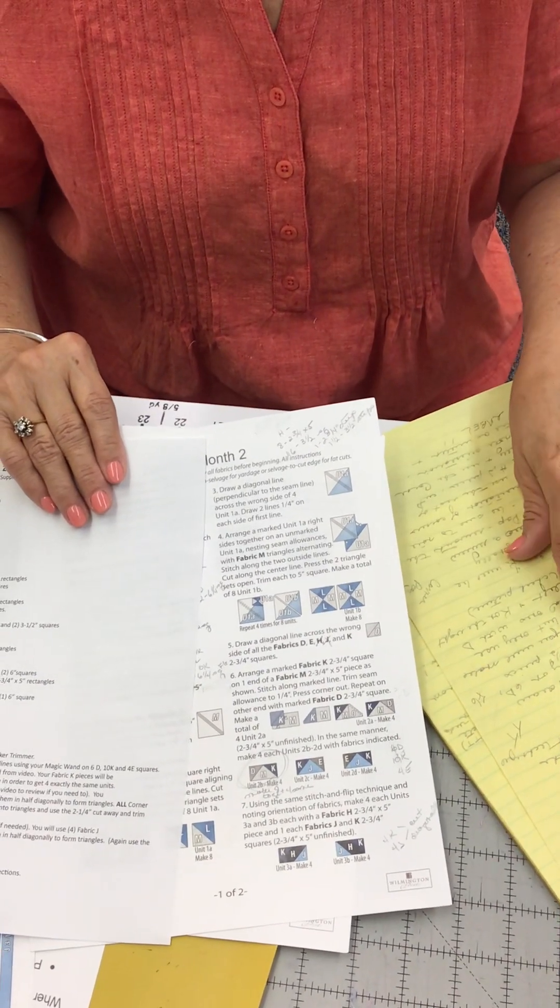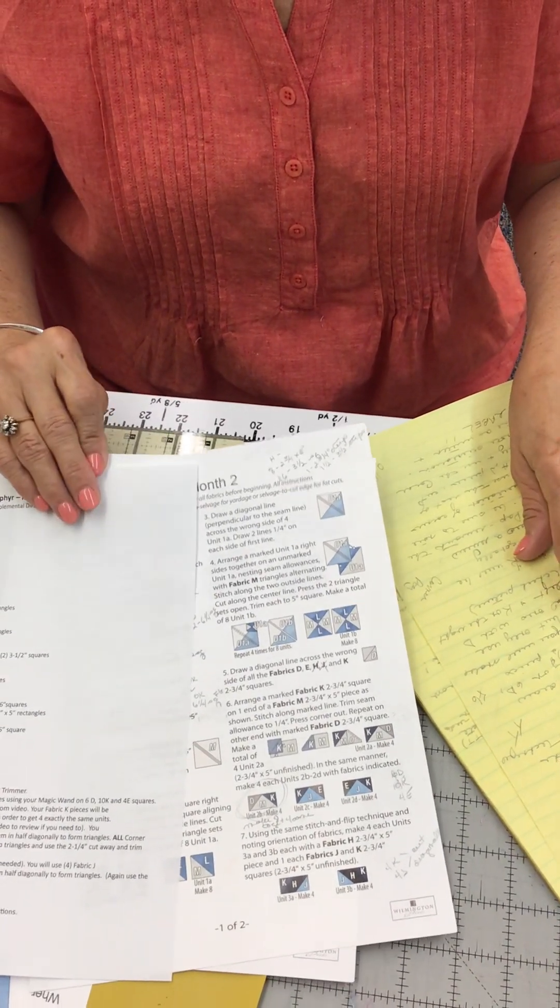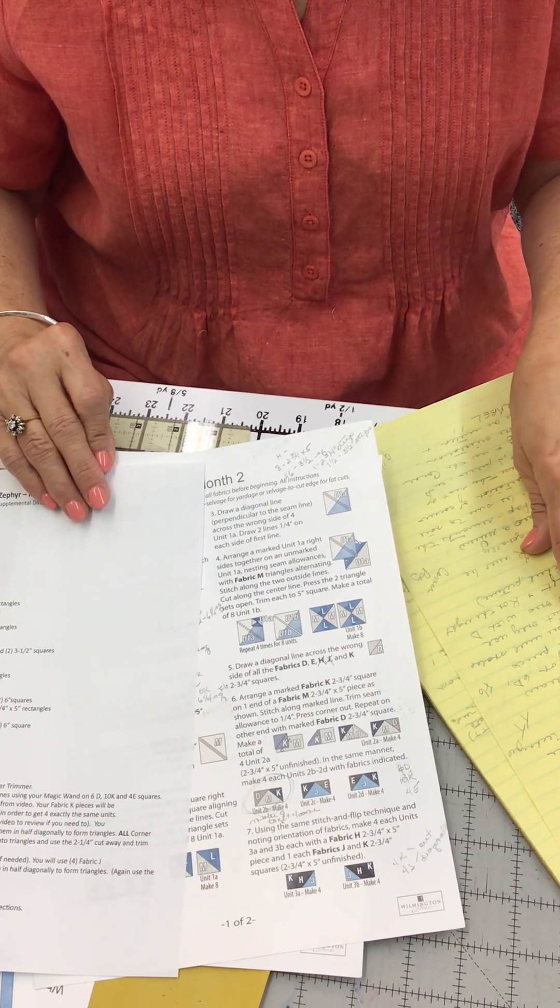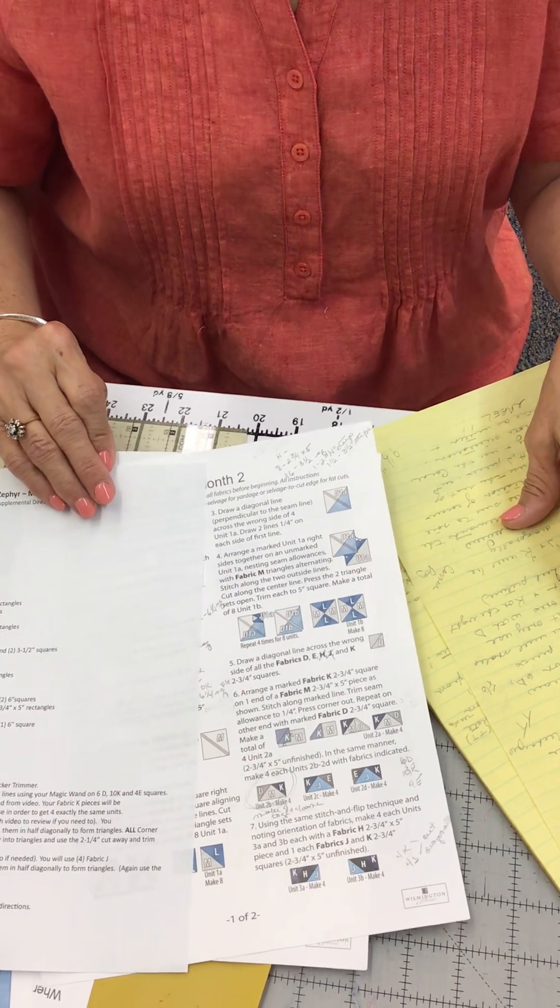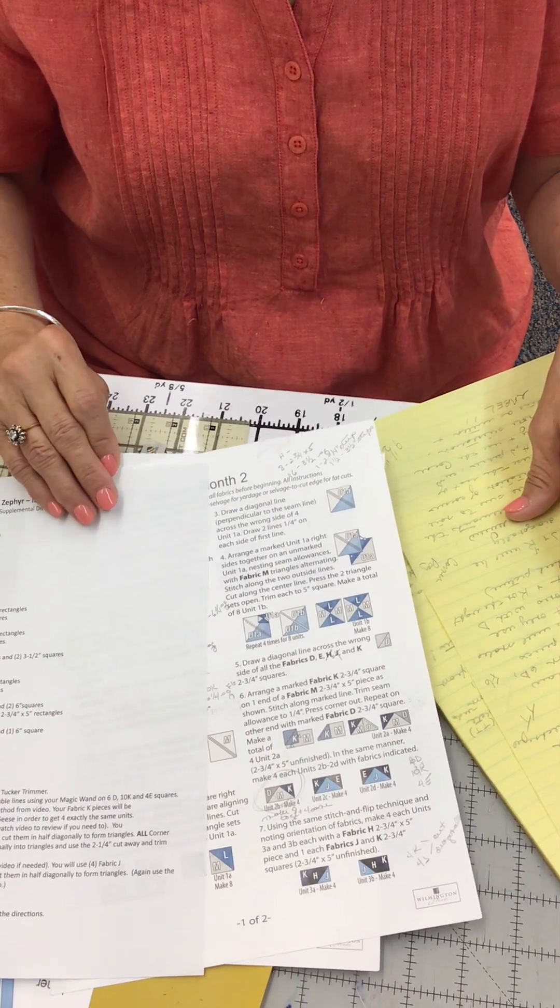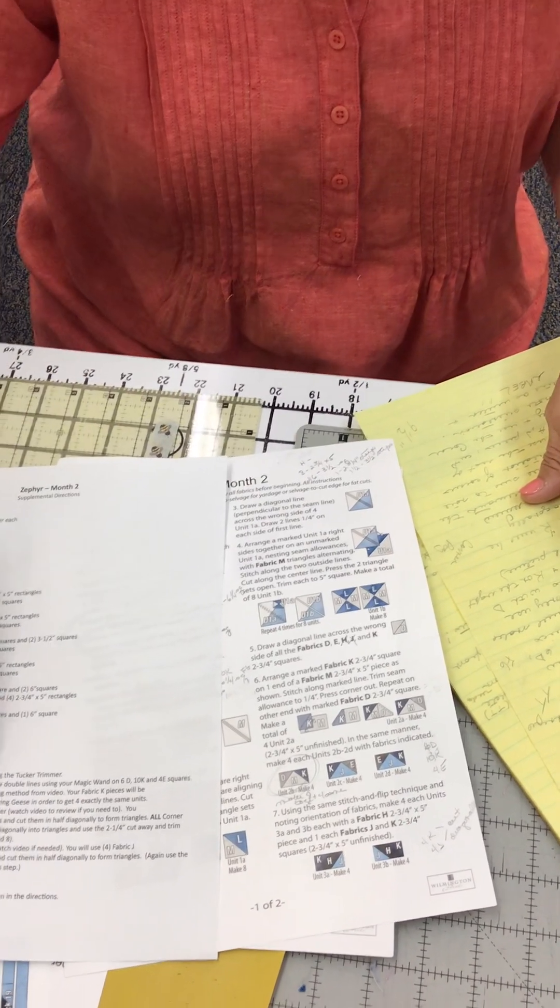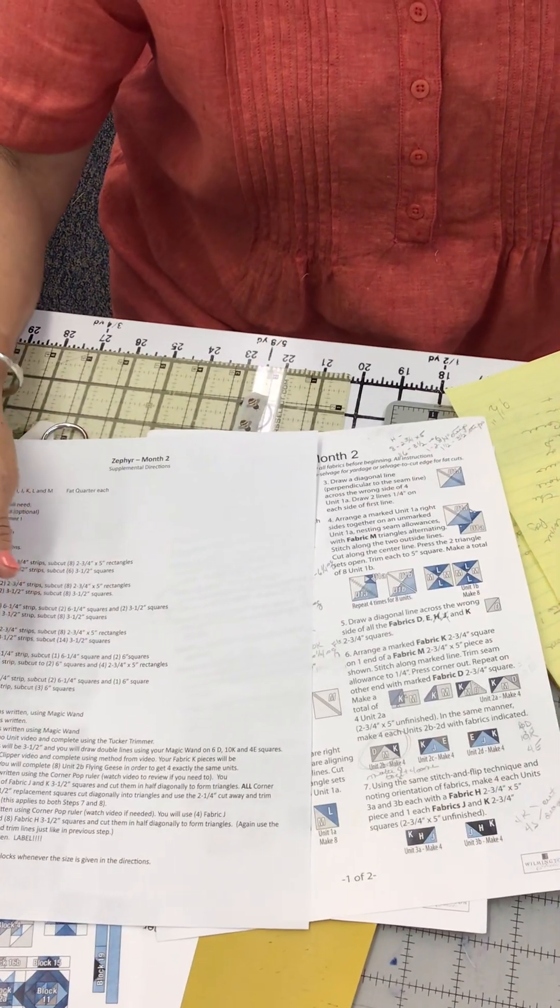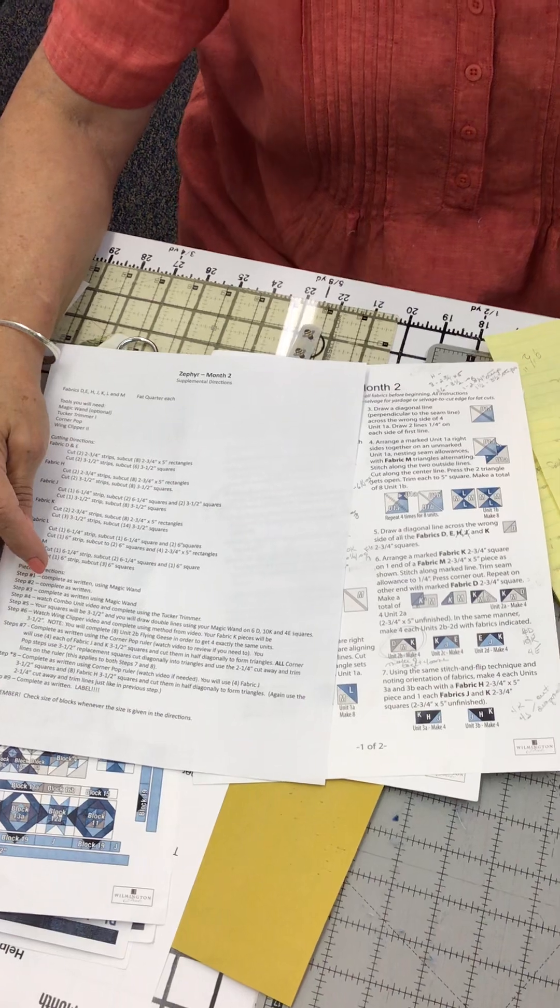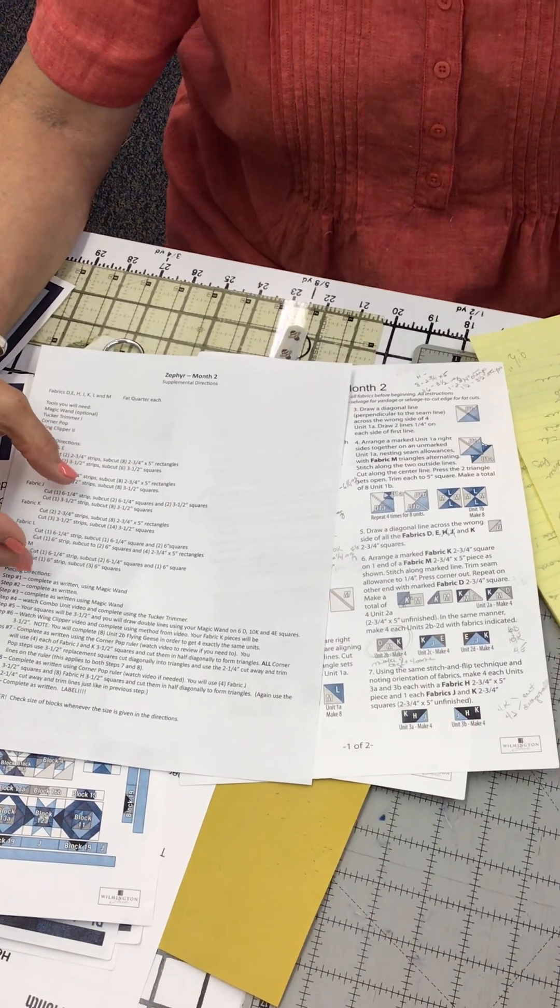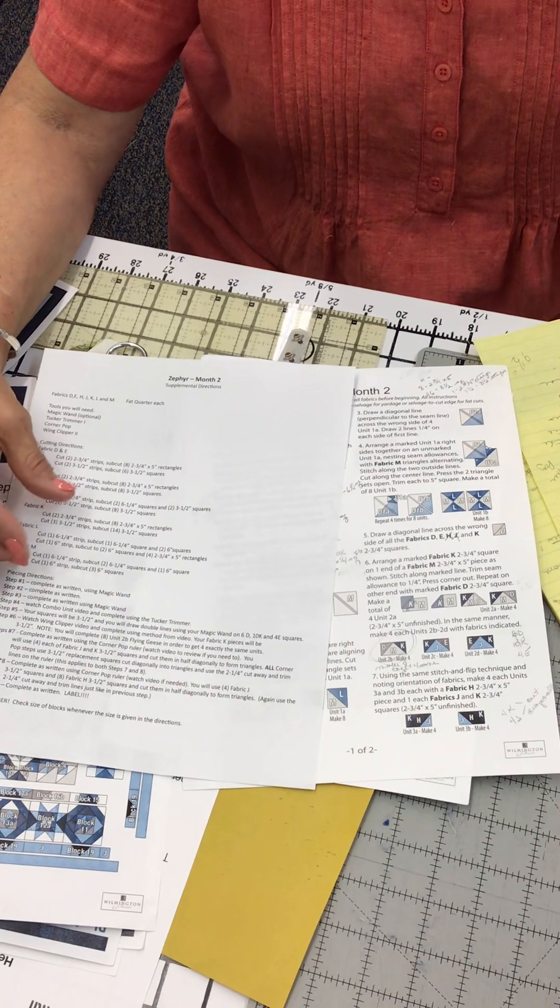Step five. Note that the directions tell you to draw diagonal lines. And you'll only be doing that on six D pieces, 10K, and four E pieces. And your pieces will be three and a half inches. But that's noted also on here. Step six. You will be making eight. This is flying geese. And you will be making eight of unit two Bs. You will only use four of them.